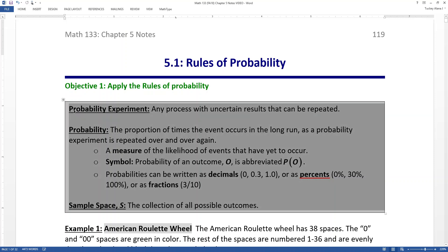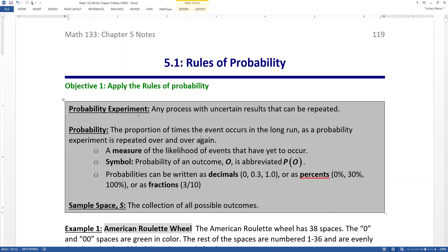So the first thing we're going to do is the definitions. So probability is, to be a probability experiment, is any process with uncertain results that can be repeated. And the probability is the proportion of times the event occurs in the long run as a probability experiment is repeated over and over again. Now these two things taken together are called the frequentist definition of probability. There are actually other ways to deal with probability, but for our purposes and statistics, this is the most appropriate for us at this level.